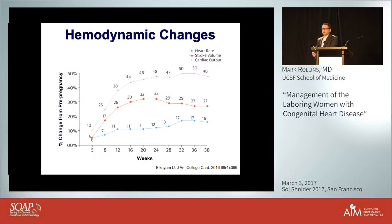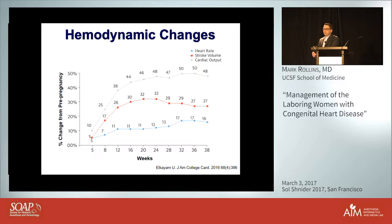Before going into management specifics, it's worthwhile pausing to think about the physiologic changes of pregnancy. Hemodynamically, cardiac output increases with gestation and reaches about 50% greater than its pre-pregnancy value. Both heart rate and stroke volume increase, with stroke volume being the larger contributor to cardiac output, and of course there are decreases in the SVR. All of these will affect individuals with congenital heart defects.